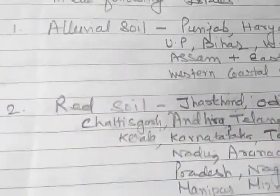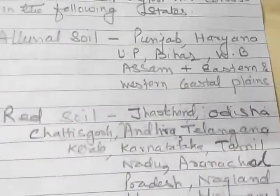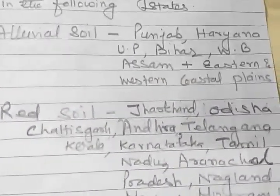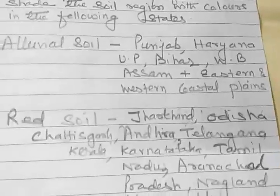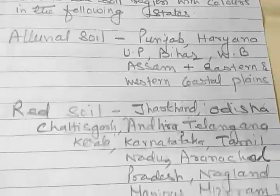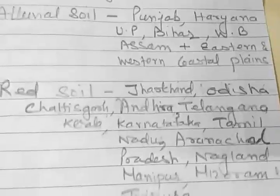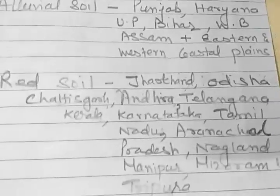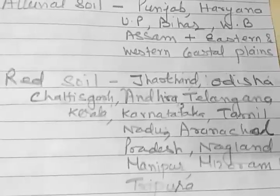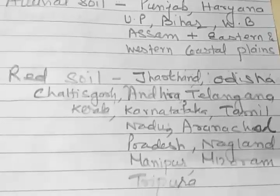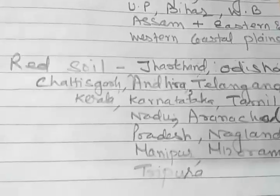Red soil is found in Jharkhand, Odisha, Chhattisgarh, Andhra Pradesh, Telangana, Kerala, Karnataka, Tamil Nadu, Nagaland, Manipur, Mizoram, Tripura, etc.